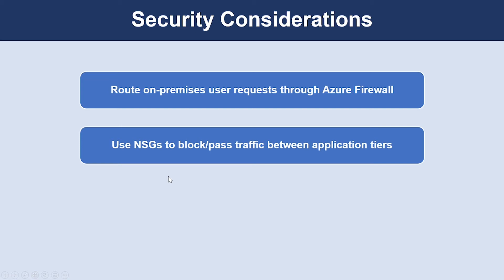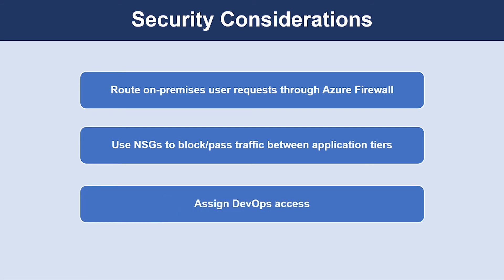The second consideration is using NSGs to block or restrict traffic between application tiers. The traffic between tiers is restricted by using NSGs. The business tier blocks all traffic that doesn't originate in the web tier, and the data tier blocks all traffic that doesn't originate in the business tier. If you need to expand NSG rules to allow broader access, weigh these requirements against the security risk. Finally, assign DevOps access using RBAC to restrict the operations that DevOps can perform on each tier.